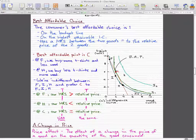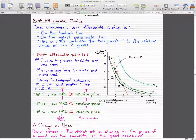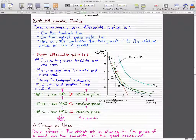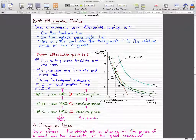In this figure, the best affordable point is C. At point F, we buy more t-shirts and less wood. That is obvious because it's up here next to the 10 for t-shirts and next to the 0 for wood. So at F, we buy more t-shirts and less wood.